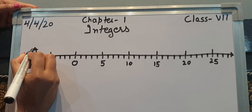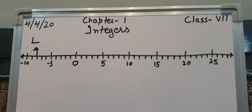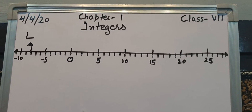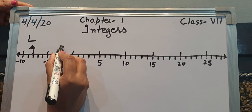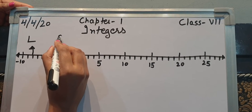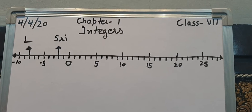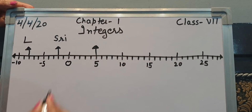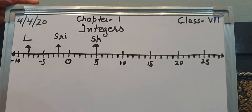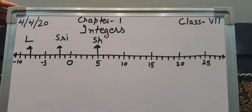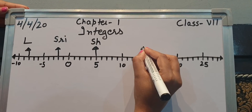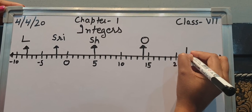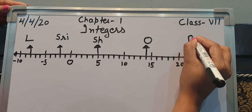Now we will label the places on the number line. For Lahul Spiti we will write capital L. For Srinagar we will write SRI. For Shimla we will write SH. For Ooty we will write O. For Bangalore we will write B.